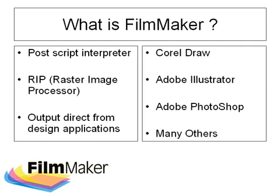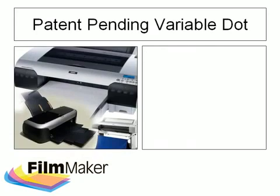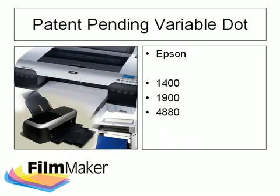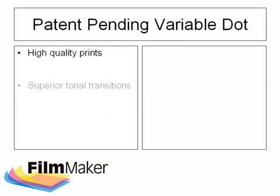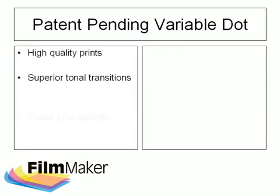Now whilst this kind of product is not unique, our patent-pending variable dot technology is, and it's this feature found in every copy of Filmmaker that makes this product the number one choice for the professional screen printer. Epson printers such as the 1400, 1900, 4880, 7880 and 9880 have a built-in technology that enables them to print three different dot sizes in one place, resulting in high quality prints and superior tonal transitions within printed images.